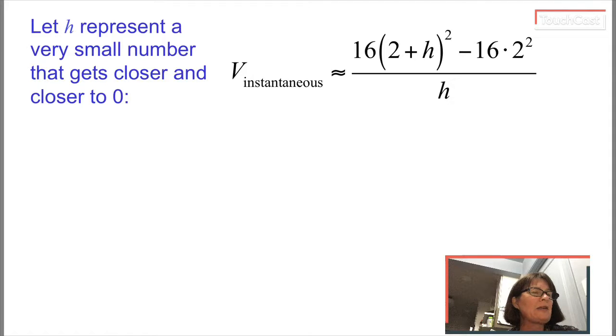So that letter, that variable h, is standing for some tiny value. When I used my calculator, first it was like 0.1 and then it was 0.01 and 0.0001. And you can imagine letting it get smaller and smaller and smaller.